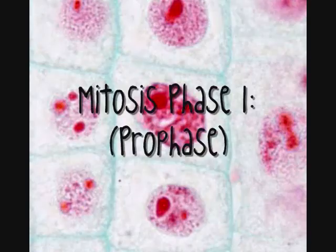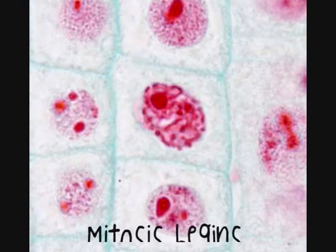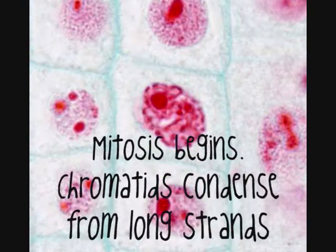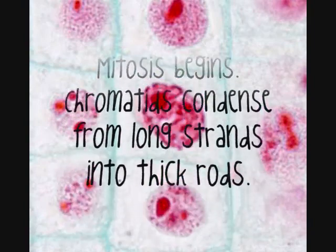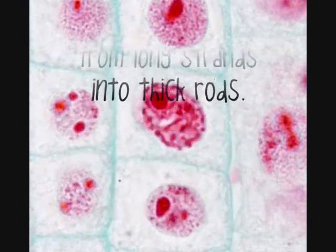Mitosis phase one: prophase. Mitosis begins. Chromatids condense from long strands into thick rods.